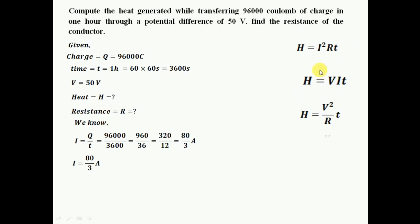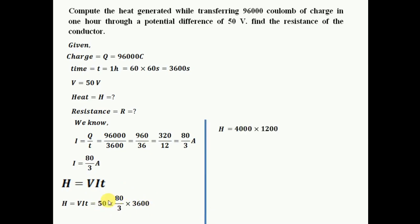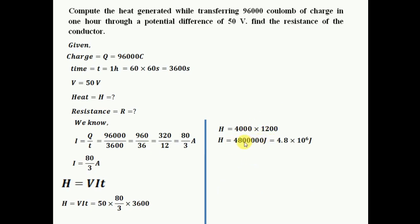I have the current but not the resistance, so I should not use formulas containing resistance. I'll use H equals VIT. Substituting: potential is 50, current is 80 by 3, and time is 3600 seconds. Multiplying 50 times 80 gives 4000, and cancelling 3 with 3600 gives 1200. Multiplying 4000 by 1200 gives 4,800,000. Shifting the decimal, this is 4.8 times 10 to the power of 6 Joules.